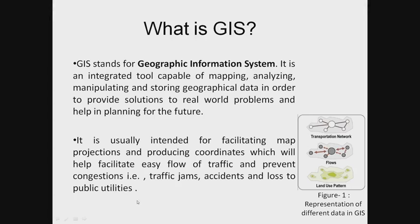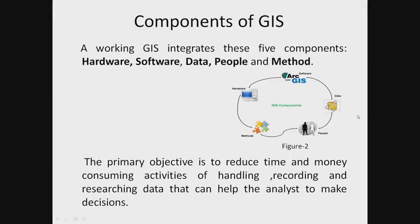Here is a figure diagram representing how different GIS software represent different GIS conditions in their respective software. Now, here we have the components of GIS. Working GIS integrates these five components to produce any result.